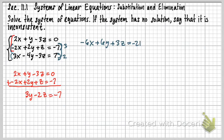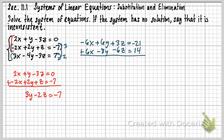For the bottom equation, multiplying by 2 gives me 6x - 8y - 6z = 14. Now I add those two together. My x's are opposites and give me 0. That results in -2y - 3z = -7.